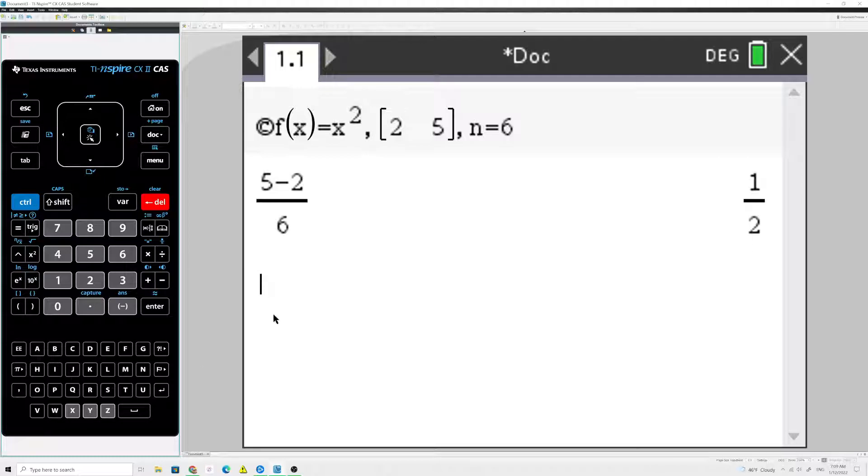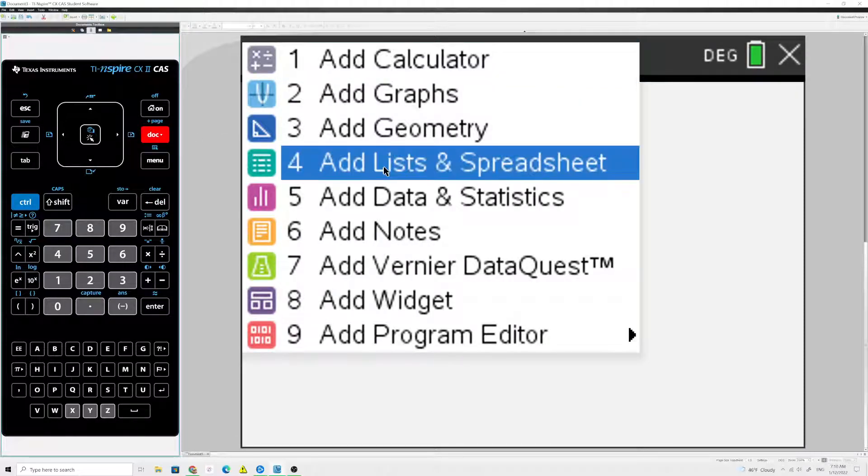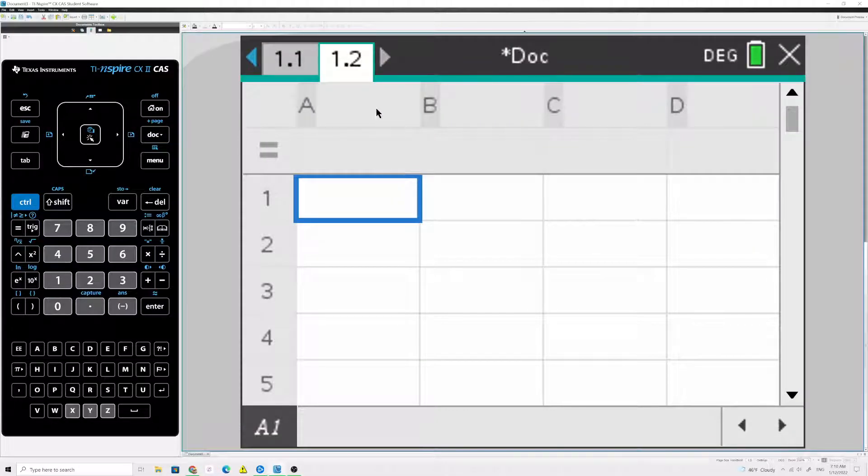The easiest way that I know to do this in the Inspire is to add a page to this document. So press Control-Doc, and the type of page that we want is a list or a spreadsheet. So we're going to use the right endpoint, so I'm going to call this column rights, and our first right endpoint, as I said, was 2.5,